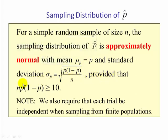And this is true provided that n times p times one minus p has to be greater than or equal to 10. So this is sort of like the requirement for the central limit theorem, where n had to be greater than or equal to 30. In this case, n times p times one minus p has to be greater than or equal to 10. We also must require that each trial be independent when we're sampling from finite populations.